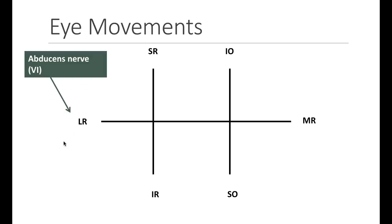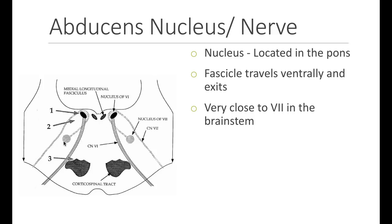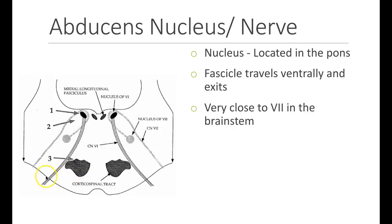The sixth nerve, as we discussed, is responsible for abducting the eye. The signal begins in the nucleus, which is located in the dorsal pons, right up next to the fourth ventricle. The fascicle of the sixth nerve exits ventrally and travels through the brainstem next to the corticospinal tracts, and exits ventrally.